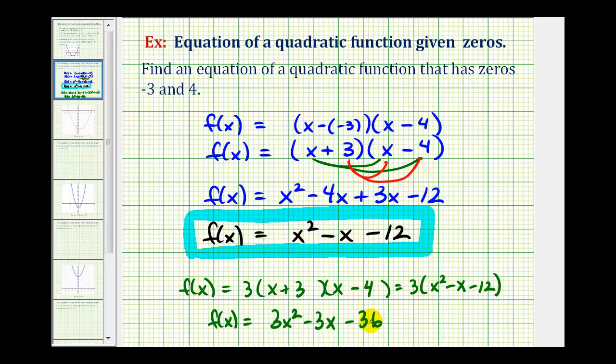I wanted to mention this because we can't just put a constant here in front of the x squared. It would have to be a constant in front of the two binomial factors.